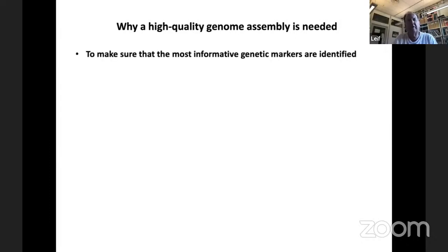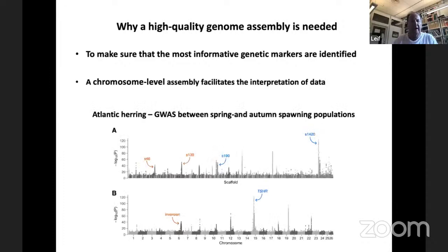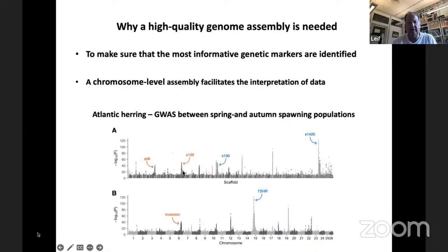So why are high-quality genome assemblies needed? To make sure the most informative genetic markers are identified. Chromosome-level assembly also facilitates interpretation of data. I illustrate this with Atlantic herring data doing genome-wide association between spring and autumn spawning populations. The first-generation assembly based only on Illumina sequencing was highly fragmented, whereas a chromosome-based assembly reveals that two apparent signals are actually from a single inversion on chromosome 6, and two other signals are from the same region on chromosome 15 containing the TSHR locus, which I think is the key gene determining spawning time in herring.